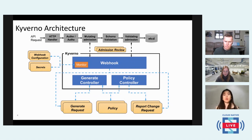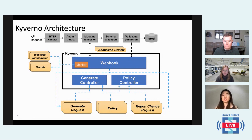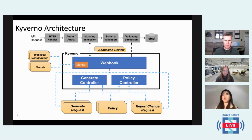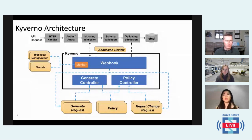Kyverno also generates the policy report, which audits the policy results in a policy report CR. You can have an aggregate view of the results of the policy decisions. Kyverno also runs a monitor in the webhook server, which keeps monitoring the webhook status as well as managing the Kyverno secrets and config maps. This is the high-level architecture of the admission controller of Kyverno. Kyverno also provides a CLI tool that allows you to apply policy without the cluster, and you can also use the CLI to automate that in your CI/CD pipeline or validate configuration.